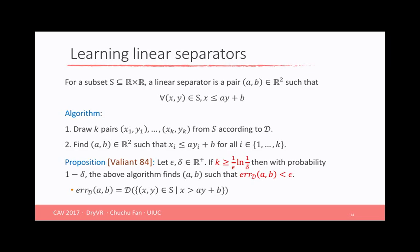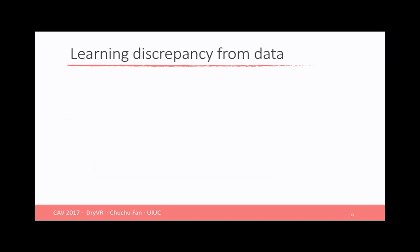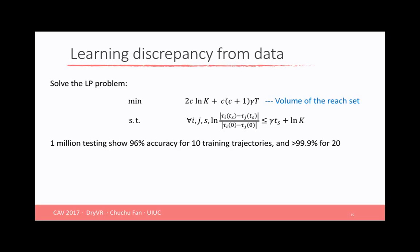So essentially we can use the same algorithm to get those. Among all the possible gamma and k's, we want the one that can give us the tightest over approximation. So that means we are going to solve the following linear programming problem: minimize the volume of the reach set such that for every pair of the sampled trajectories, this inequality defined by the discrepancy function holds.